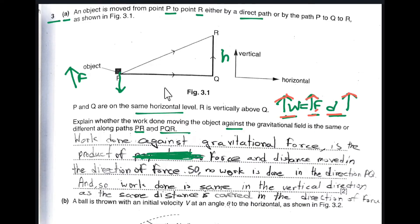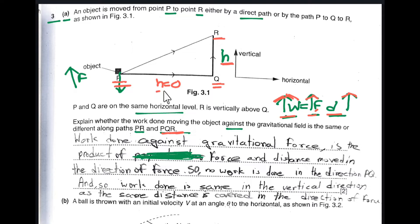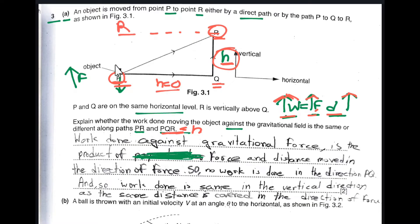For path P to Q to R, we need to find the work done in the vertical direction. The vertical force is acting. From P to Q there is no vertical distance since it is a horizontal path, so the vertical distance is zero. From Q to R the vertical distance is H. For the direct path P to R, since P and Q are on the same horizontal level, the vertical distance is also H.